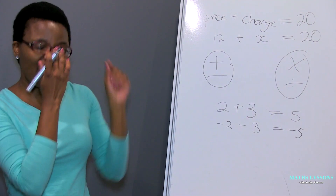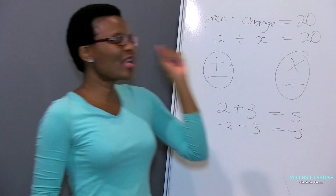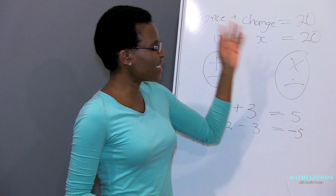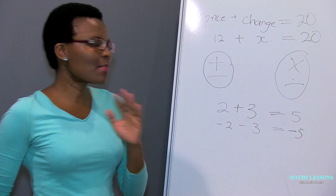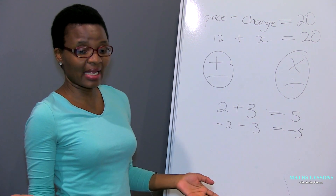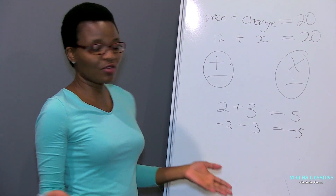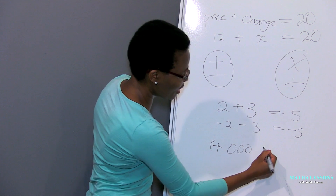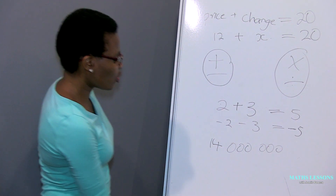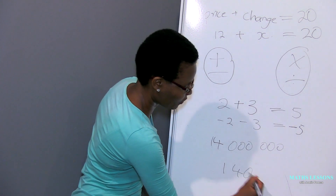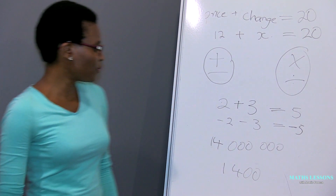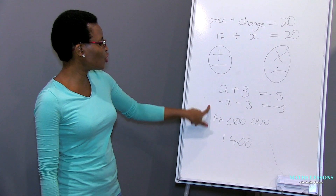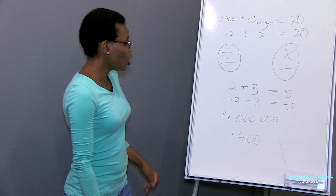Remember, maths solves everyday life problems. When you interpret those numbers, let's say you're giving them to your boss — your boss will interpret those numbers differently. For example, recently a student at university was paid 14 million by NSFAS. That student was supposed to be paid 1,400. What happened? Someone just kept pressing zeros and the system paid that student 14 million instead of 1,400.